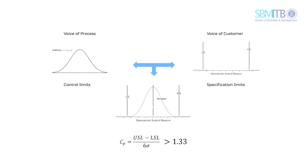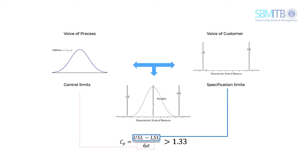Process capability becomes our concern when we compare both limits. Theoretically, process variations indicated by sigma, or standard deviations, must be less than the range of the specification. This comparison is stated as a capability index, or CP. CP equals USL minus LSL divided by 6 sigma. With this formula, a process is capable if the capability index is higher than 1. However, standard industry uses 1.33 as the minimum capability index.